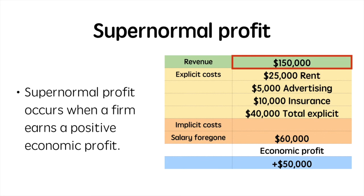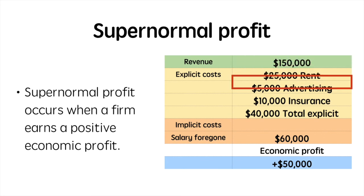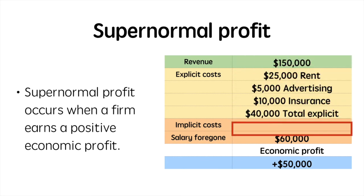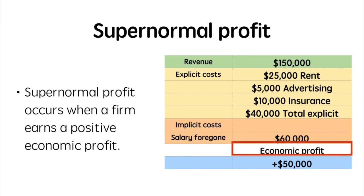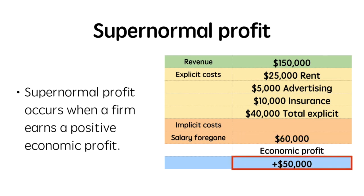Supernormal profit occurs when a firm earns a positive economic profit. The difference in this example is that Sam is earning more from the business than she could have working in a salaried position. Her accounting profit would be equal to $150,000 minus the $40,000 in explicit costs, giving an accounting profit of $110,000. After subtracting the implicit costs of $60,000, Sam is left with a positive economic profit of $50,000.